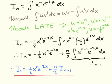The key step was identifying which factor to differentiate. Using LATE, or just common sense, we note that integrating x^n would increase the power, which doesn't help; differentiating it reduces the power. We've obtained our reduction formula, and on the next slide we'll use it to calculate I_3.